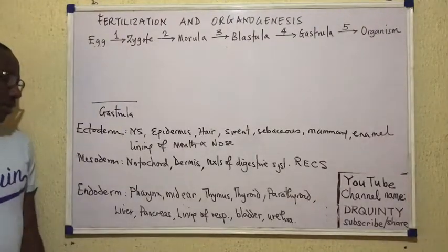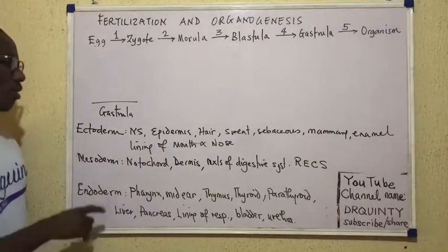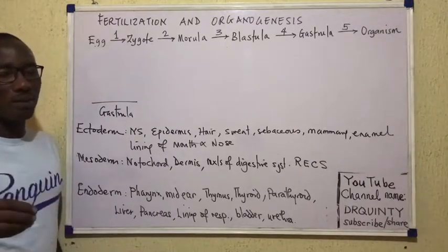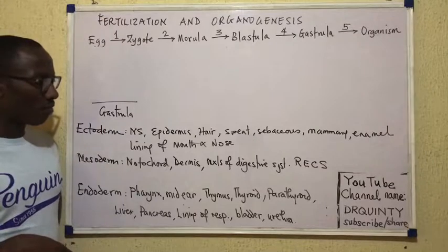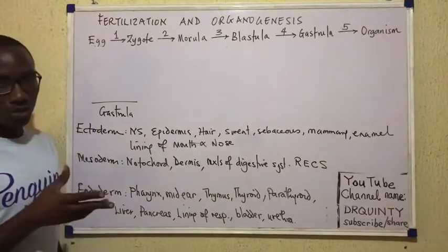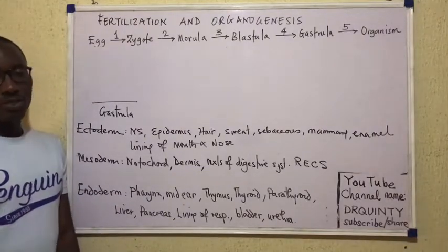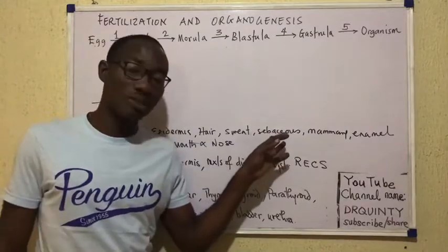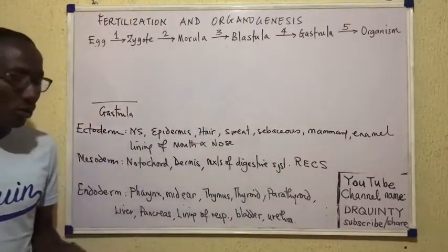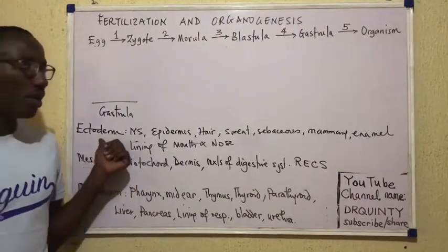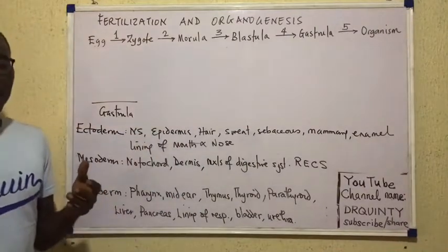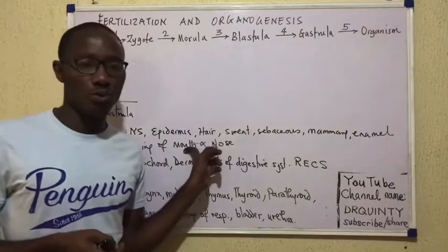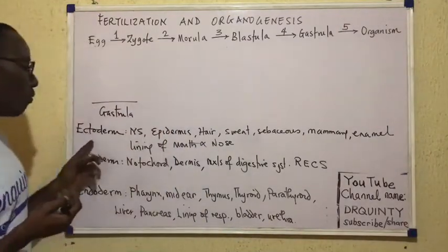The ectoderm, which is the outer layer, forms the nervous system — so the nervous system is ectodermal in origin. Then we also have the epidermis and epidermal structures. The epidermis is on the outside, so it comes from ectoderm. Epidermal structures like hair, sweat glands, sebaceous glands, and mammary glands all come from ectoderm. The enamel — the outer covering of a tooth — is also ectodermal in origin. And the epithelial lining of the mouth and nose all come from ectoderm.